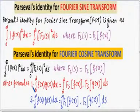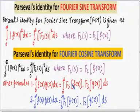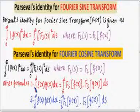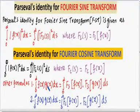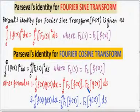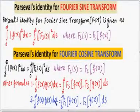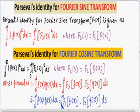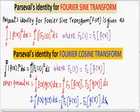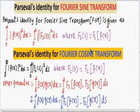Formula 1: The integral from 0 to infinity of f(x) times g(x) dx is equal to the integral from 0 to infinity of Fs(f(x)) times Fs(g(x)) ds. Formula 2: The integral from 0 to infinity of f(x) times g(x) dx is equal to the integral from 0 to infinity of Fc(f(x)) times Fc(g(x)) ds. These are all the formulas related to the Fourier Sine Transform and Fourier Cosine Transform to be used when solving problems.